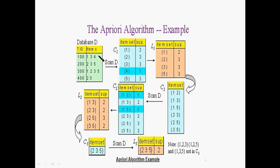We go to the database and scan C2. We count the support for each pair: {1,2}, {1,3}, {2,3}, {2,5}, {3,5}, and so on. Items with support equal to 2 meet the threshold. We remove all pairs that do not meet the minimum support. The frequent 2-item sets are L2, meaning 2 items: {1,3}, {2,3}, {2,5}, and {3,5}.